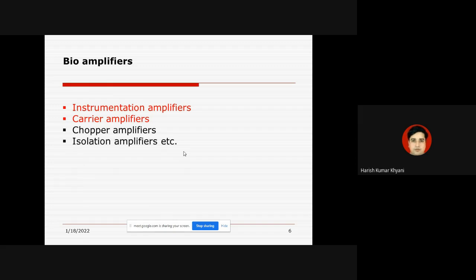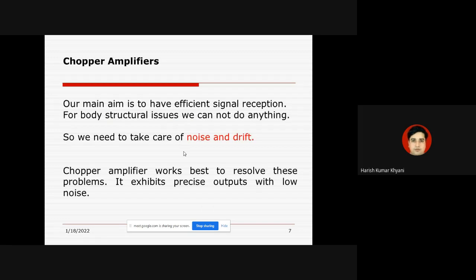In order to measure such biopotentials, we make use of special kinds of amplifiers like instrumentation amplifiers, carrier amplifiers, chopper amplifiers, and isolation amplifiers. We have already discussed instrumentation amplifiers and carrier amplifiers. Today we are going to discuss the third one, that is the chopper amplifier.